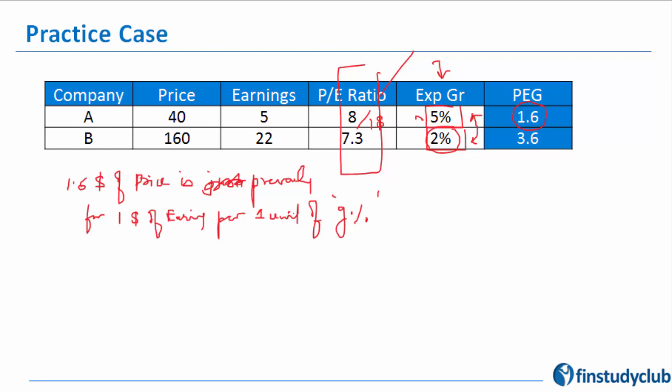Allow me to explain that again. 1.6 is the PE multiple per 1% of growth assumed in the formula.